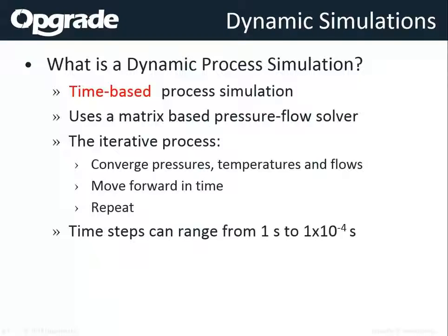We just finished a study for SASL. The duration of the time frame we looked at was an hour. So it moved forward a half a second, solved, moved forward another half a second, solved, and did that 7,200 times until we got to the answer we were looking for. Sometimes, though, half a second is far too big a time step because the changes are so large that the solver can't solve — sometimes you may be down to 1e-4 in terms of your time step.